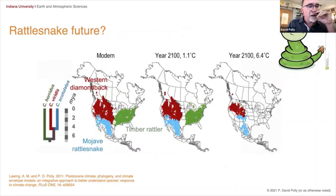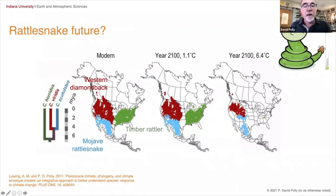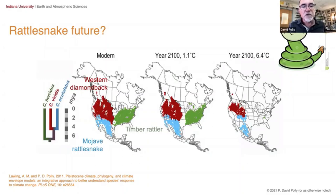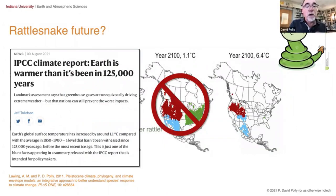For rattlesnake futures: at only 1.1 degrees C warming by 2100, they'll be affected some but not too badly. But at the full 5 degrees C — taking us to 6.4 degrees above pre-industrial levels — the timber rattler will basically have no more habitat, and neither will the others. And notably, this year we already passed the 1.1 degrees C threshold, so it's too late for that best-case scenario.